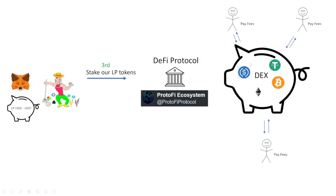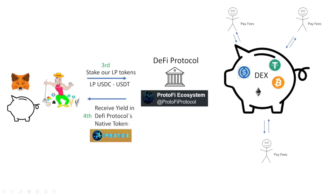Now that we've explained the concept of providing liquidity, the next step is to stake our LP tokens to start receiving yield. Once we stake our LP USDC tokens, they'll go away from our MetaMask wallet and we'll start generating what we call yield. This yield is paid by the DeFi protocol — in this case the Protofy ecosystem — in the native token Proton. Once we harvest the benefit we can see it in our MetaMask wallet. To recap: we provide liquidity, people pay fees interacting with the ecosystem, and by staking our LP tokens we earn those fees as yield.